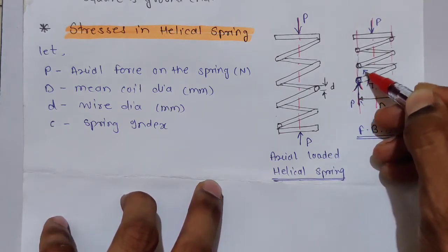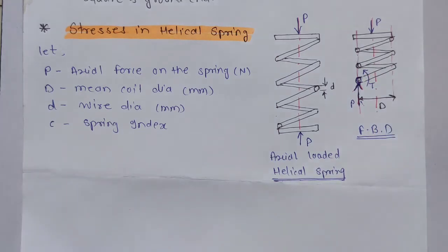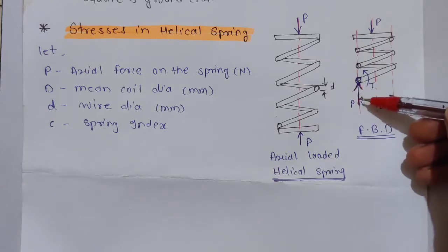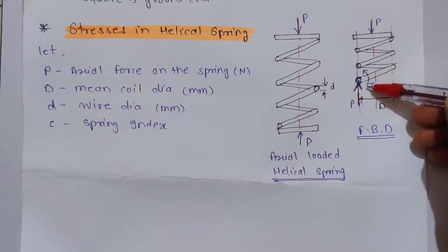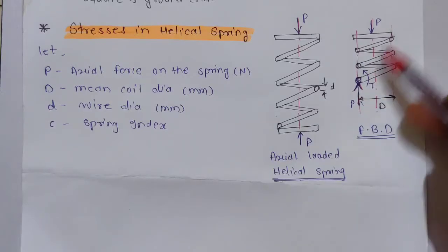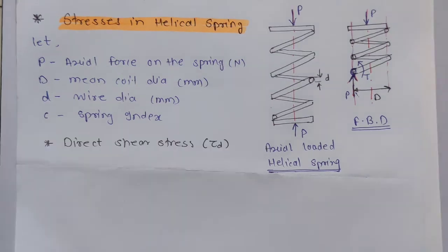The direct shear load is force upon the cross-sectional area of the spring. The second stress is torsional shear stress due to the torque. So there are two main stresses acting in the helical spring: first is direct shear stress because of load P, and second is torsional shear stress because of this torque.